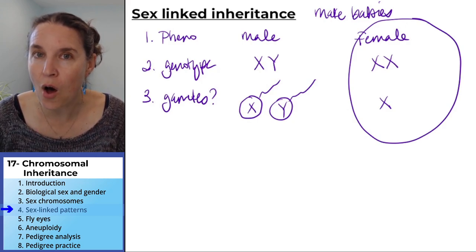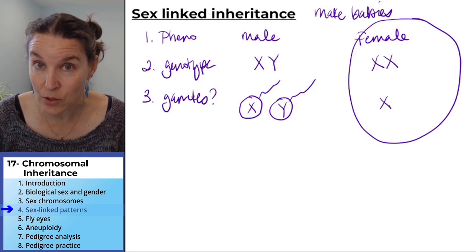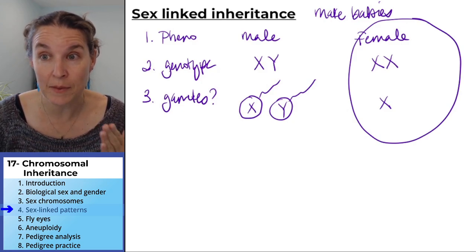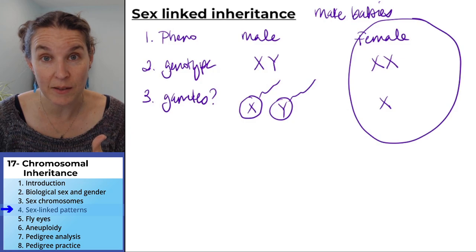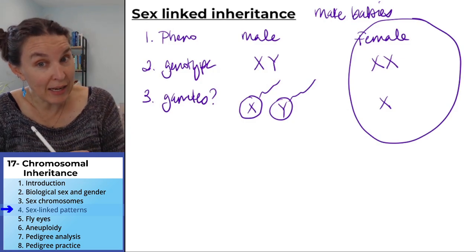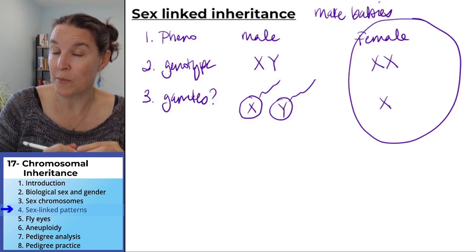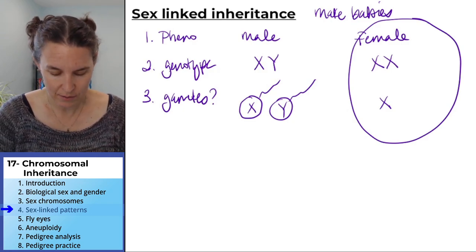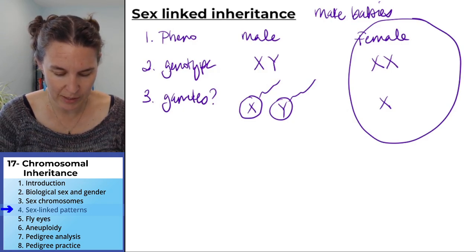But all the babies are going to get an X chromosome from their egg parent. They might get an X chromosome and they might get a Y chromosome from their sperm parent. So far, so good. Shall we do a Punnett square?